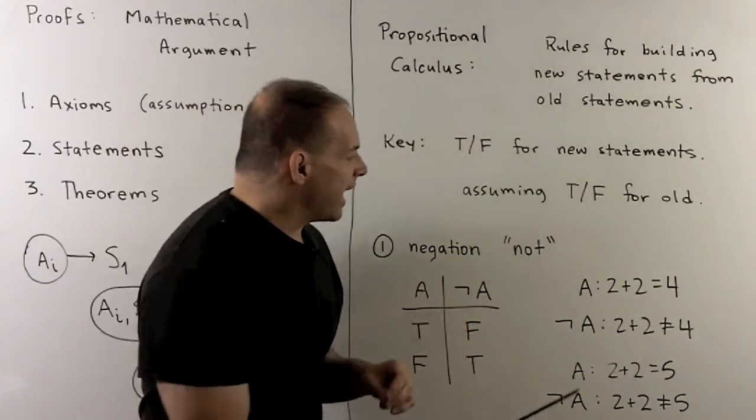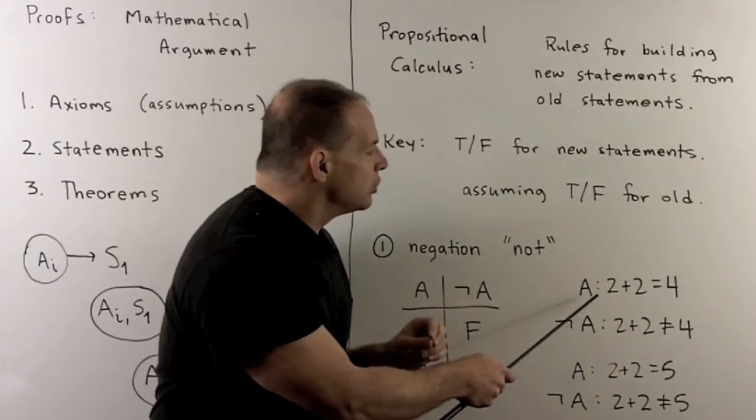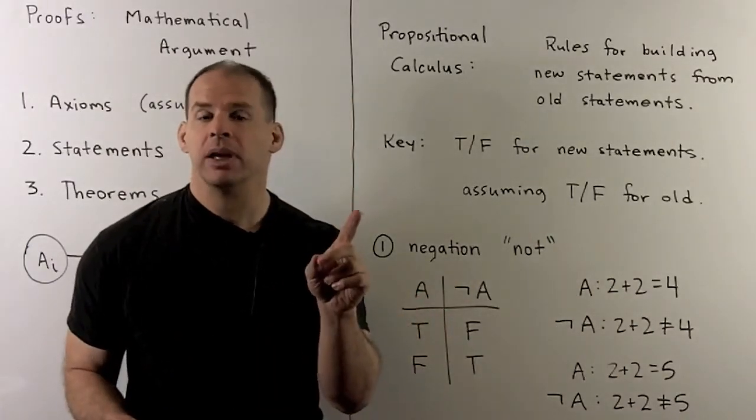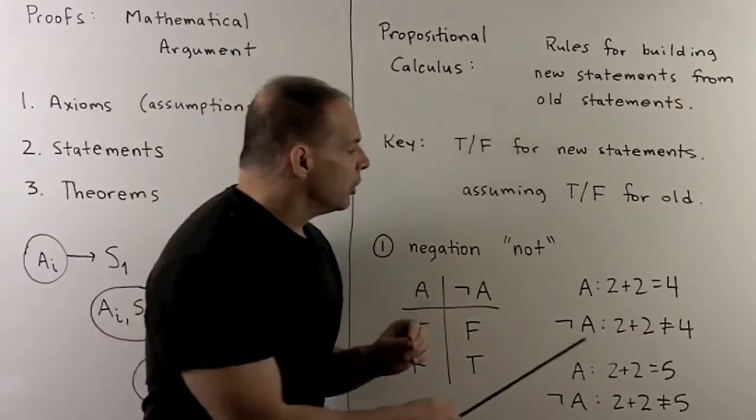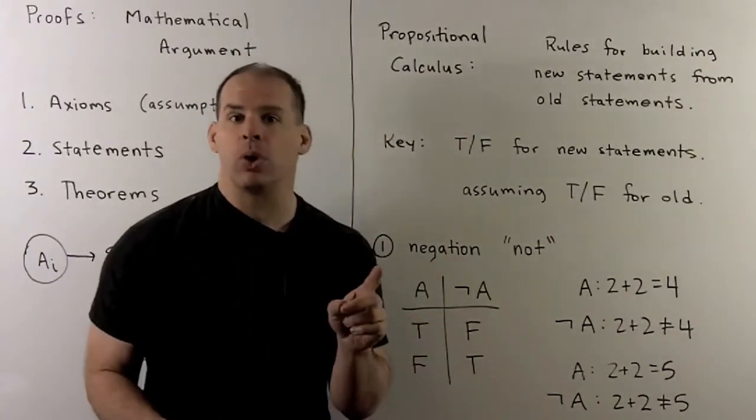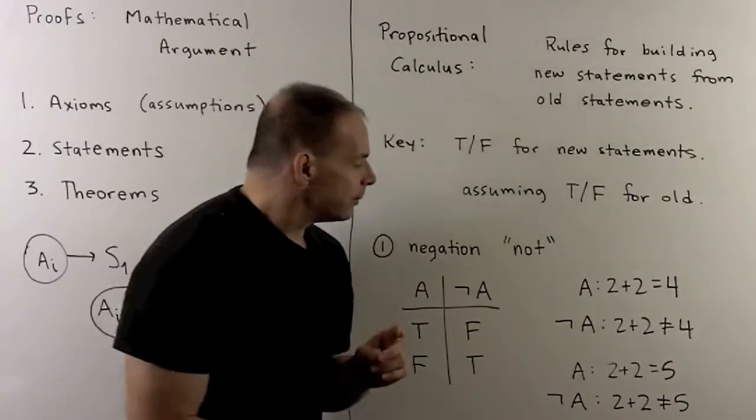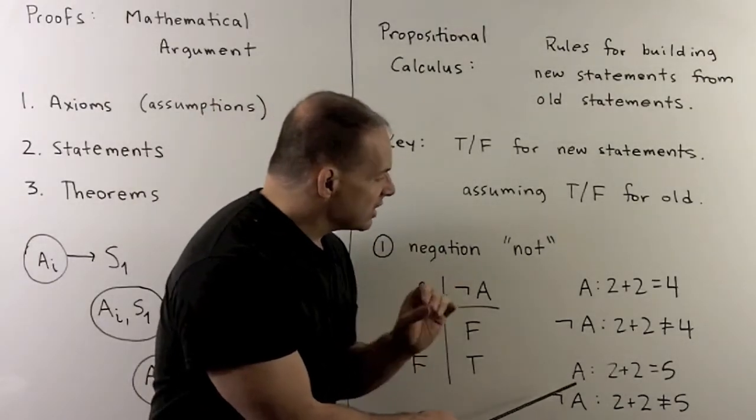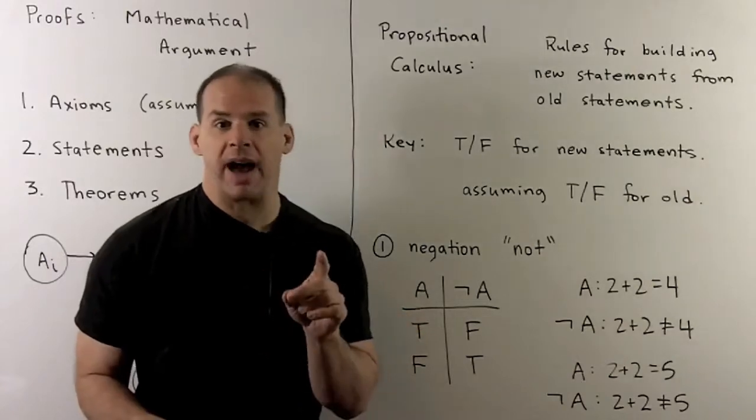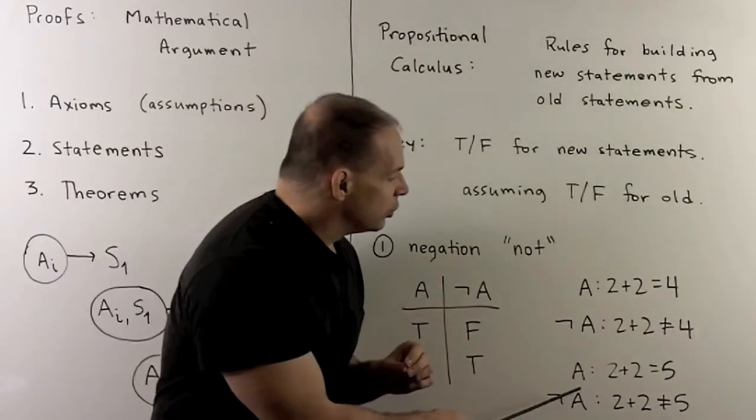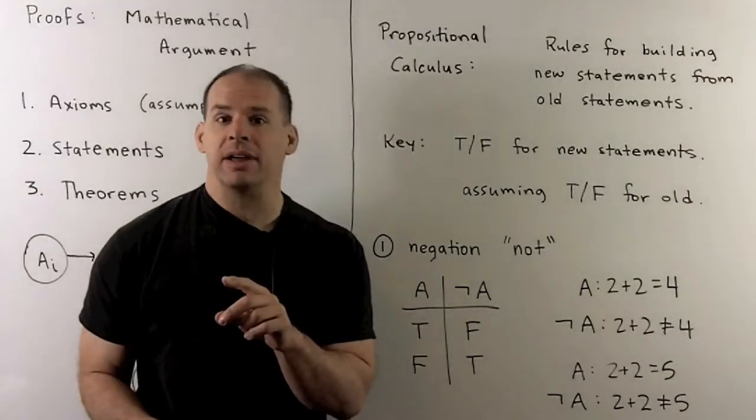So, for instance, if I had A given by 2 plus 2 is equal to 4, that's a true statement. If we negate, we'll have 2 plus 2 is not equal to 4, which is false. Likewise, if we take A as a statement, 2 plus 2 is equal to 5, which is false. When we negate, I would have 2 plus 2 is not equal to 5, and that's true.